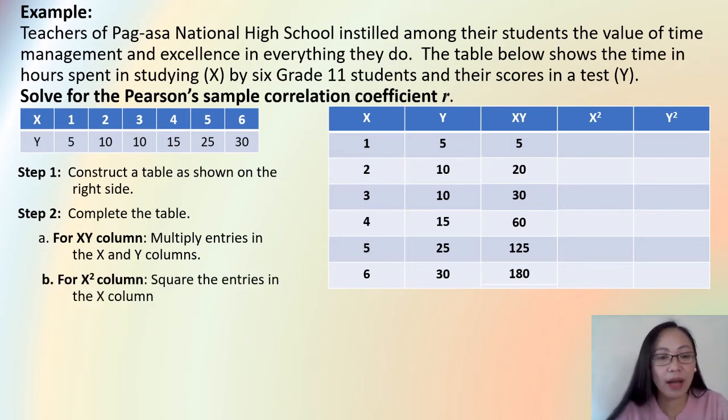Now, let's go to the next column. For X squared column, we square the entries in the X column. So, this is the X column here. Now, we will answer. 1 squared or 1 times 1 is 1 there. 2 squared is 2 times 2, 4. 3 times 3, 9. 4 times 4, that's 16. 5 times 5, 25. And 6 times 6, 36.